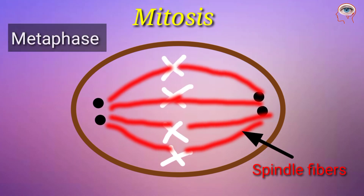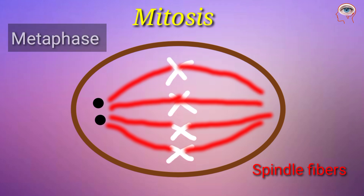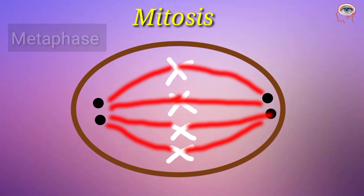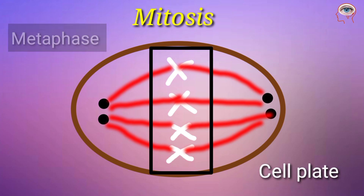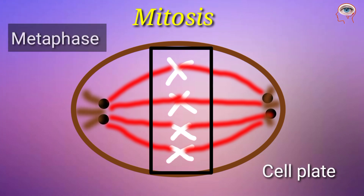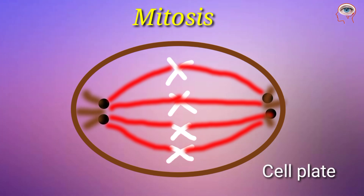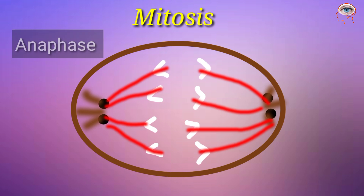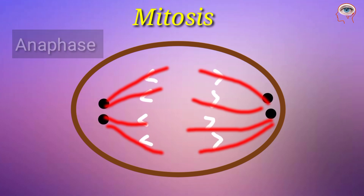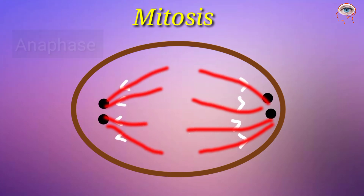The second step is metaphase. In this step, chromosomes arrange in the center of the cell, forming the cell plate. The next step is called anaphase. In this step, chromatids move towards the opposite pole of the cell.